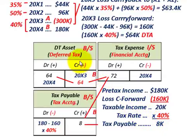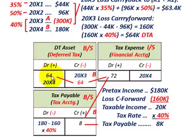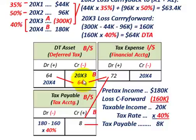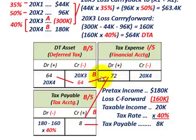Based on the deferred tax asset and tax payable for 20x4, we calculate the tax expense for the income statement. We credit Deferred Tax Asset for $64,000 and credit Tax Payable for $8,000. Together, those credits total $72,000, so we debit Tax Expense on the income statement for $72,000.